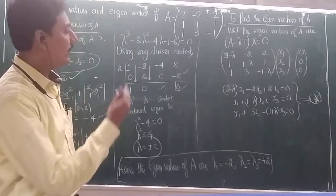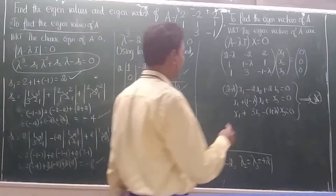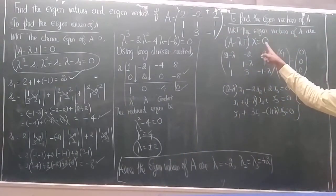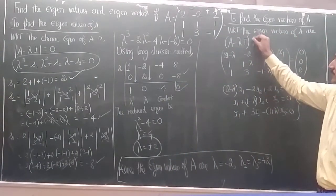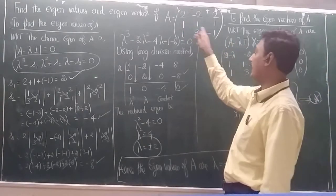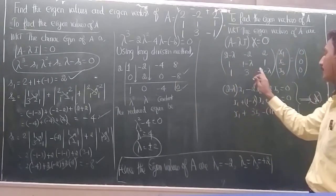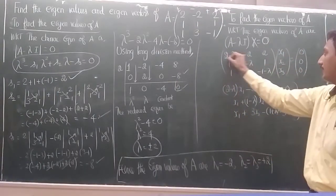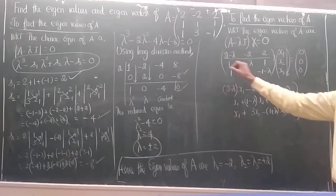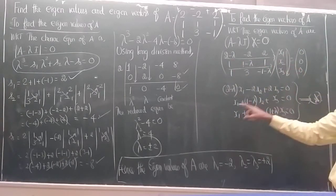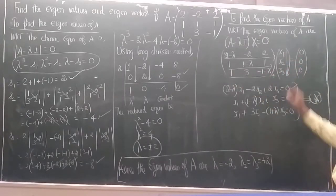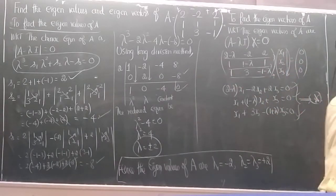Now we find the eigenvectors. The eigenvectors of A are given by (A − λI)X = 0, where X is a non-zero column matrix. We subtract λ from each diagonal element to get: (2−λ), (1−λ), (−1−λ) on the diagonal. Multiplying row by column gives us three equations — this is our star equation.